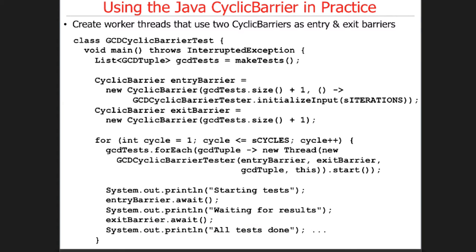Here's the cyclic barrier unit test. It goes ahead and gets the tests we want to run, then creates two cyclic barriers. What it does is make the count equal to the number of tests we're going to run — each of which will run in its own thread — plus one for the main thread, which is the thread that's going to wait. That's the entry barrier. Likewise, the exit barrier is the same thing — we're going to wait for everybody to finish, including the main thread.